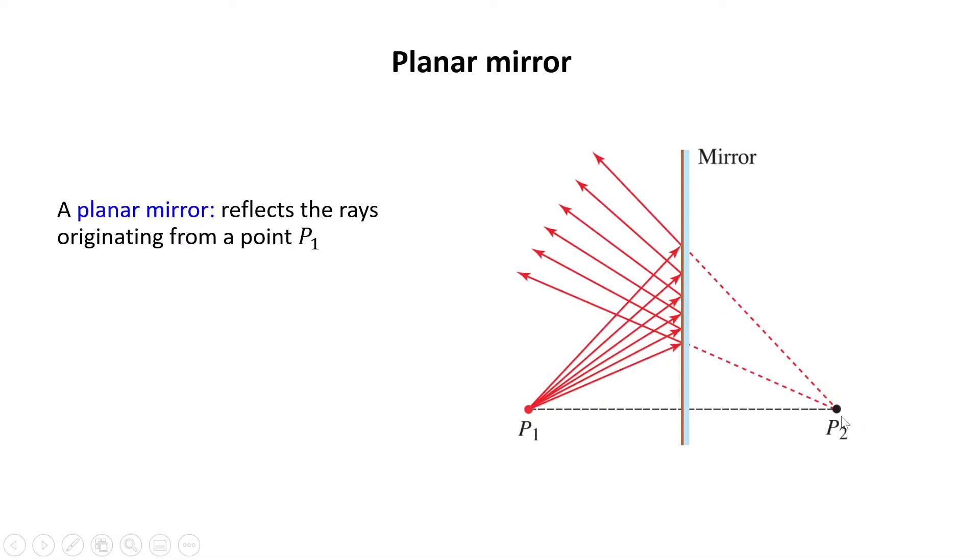We call P2 the image of P1. If I have an object instead of point P1, I can divide the object into many points and each point has a unique image point. The result of all image points is the image of the object.